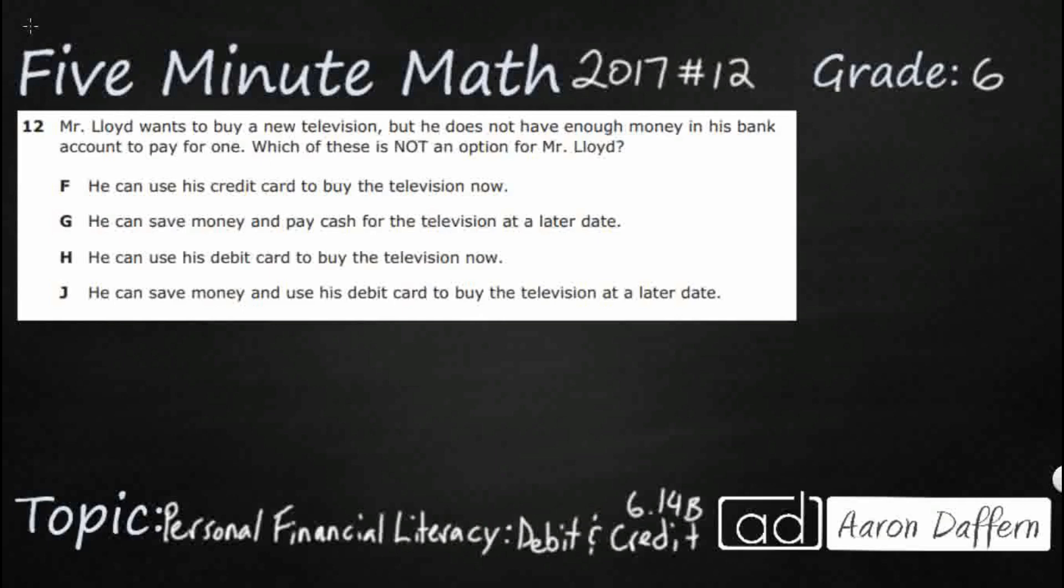So Mr. Lloyd wants to buy a new television, but he does not have enough money. That is going to be key for us. He does not have enough money in his bank account. So which one of these is not an option? Three of these things could work.